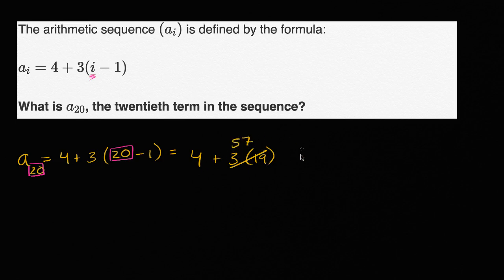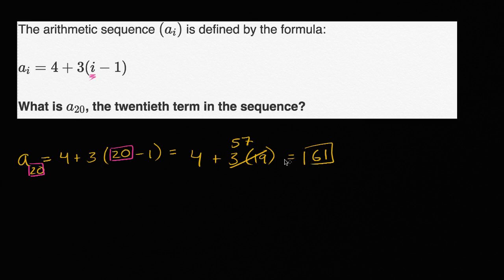And four plus 57 is equal to 61. So the 20th term in this arithmetic sequence is going to be 61.